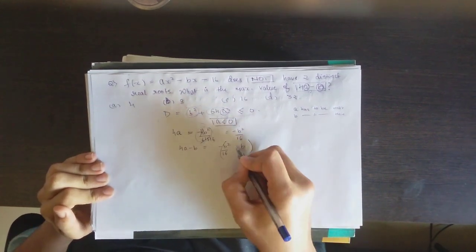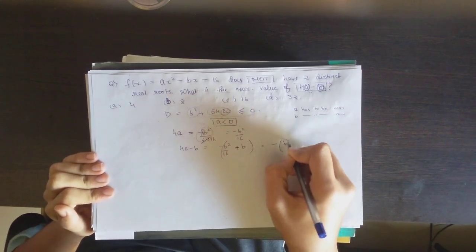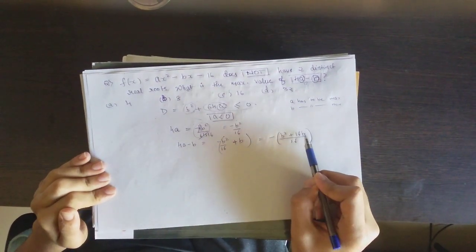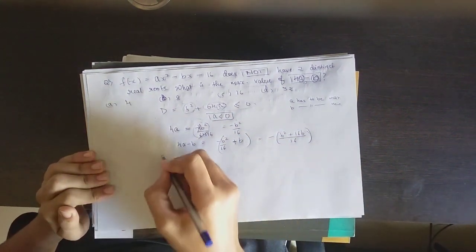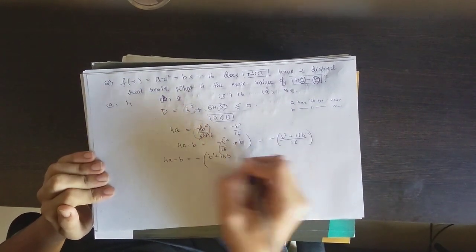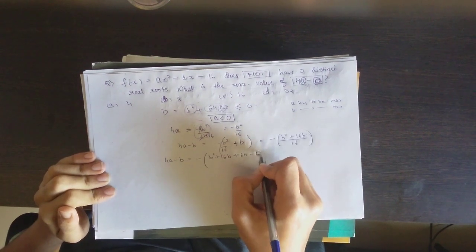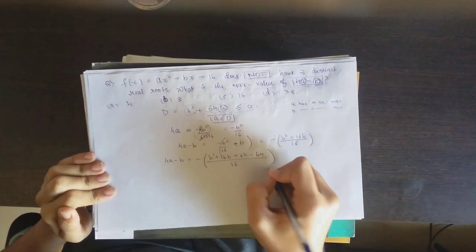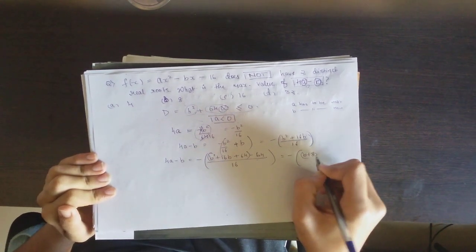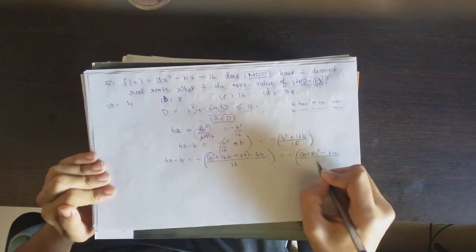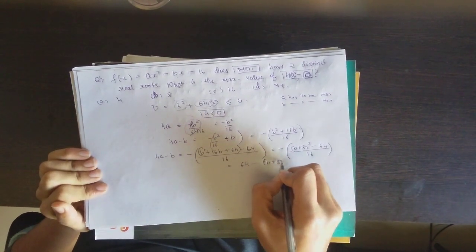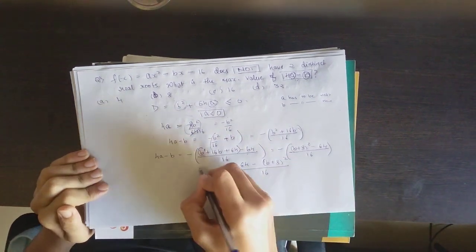Taking minus as common and finding the LCM, this becomes minus of (b squared plus 16b) by 16. To find the maximum, I'll factorize the numerator by adding and subtracting 64, which gives minus of (b plus 8) whole squared minus 64, divided by 16. Multiplying minus back, this becomes 64 minus (b plus 8) whole squared, divided by 16, which is the value of 4a minus b.